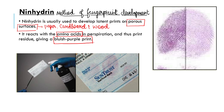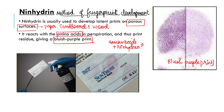The amino acids present in your fingerprint residue, plus ninhydrin, gives a bluish purple print. It makes a bluish purple visible print when we use the ninhydrin method. Your ninhydrin reacts with the amino acids which are present in your fingerprint residue.